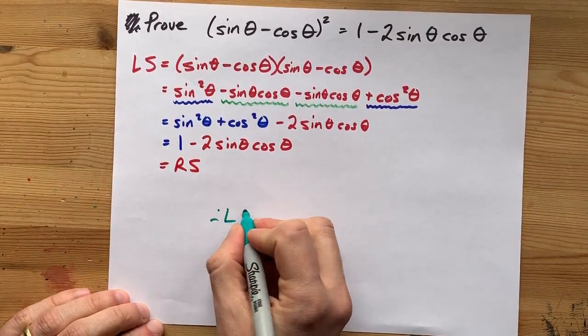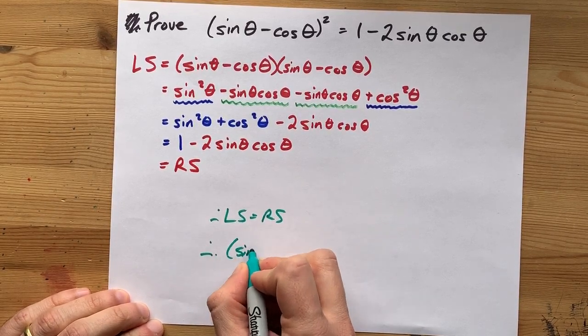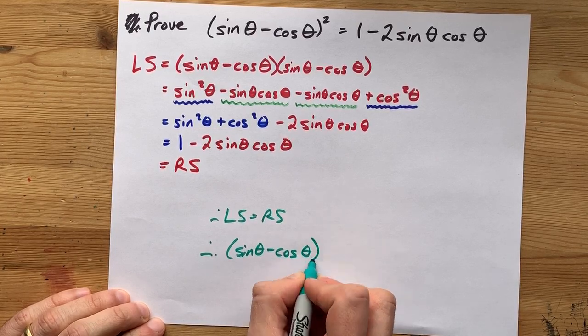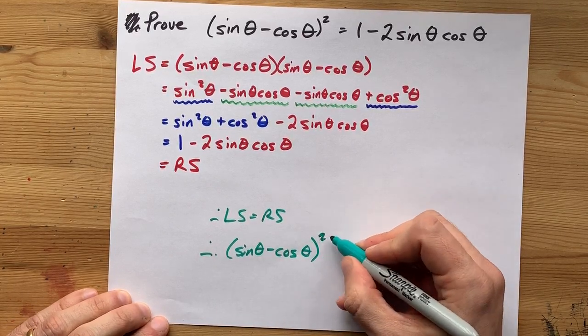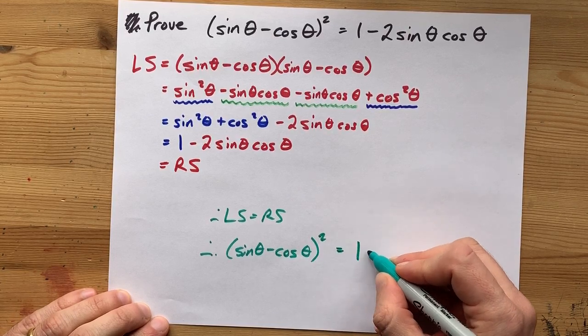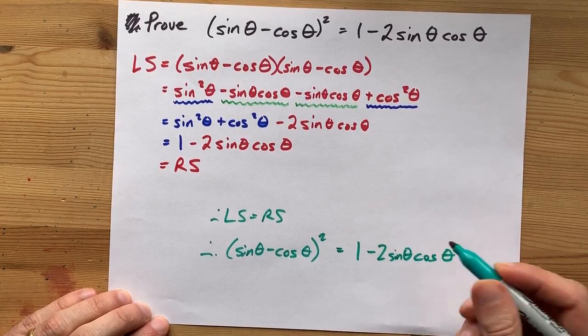So, left side equals right side, and more importantly, if you take the sine of an angle, subtract the cosine of that angle, and then square your answer, you'll get the same as if you subtract two sine theta cos theta's away from one. Wow.